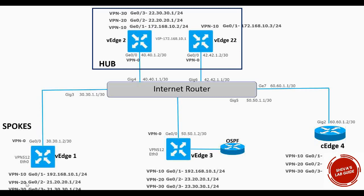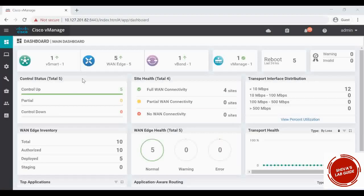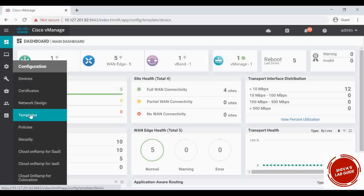I'm going to add VPN 20 and VPN 30 in each of the routers. I'll follow the IP addressing scheme where for VH1 I give 21.20.20.x, VH3 gets 23.20.20.x, VH4 gets 24.20.20.x, and VH2 gets 22.20.20.x. That's how I'm extending my VPNs.